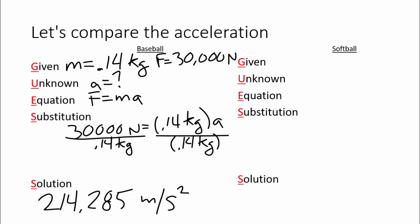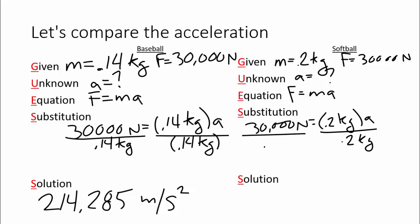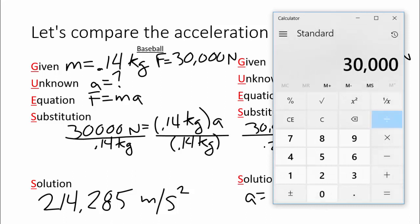What if we were to try doing that with the softball? It would be a very similar calculation. The mass is 0.2 kilograms. The force is 30,000 again. We're still trying to find the acceleration. Still using F equals MA. In this case, 30,000 newtons equals 0.2 times a. Divide both sides by 0.2 kilograms. And we end up with the acceleration equals 150,000 meters per second squared.